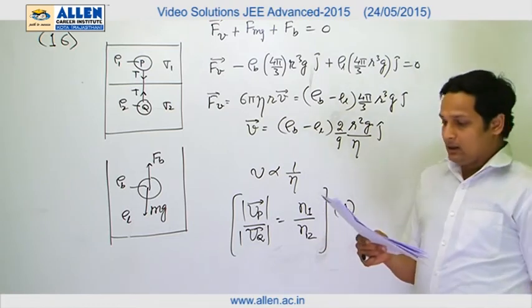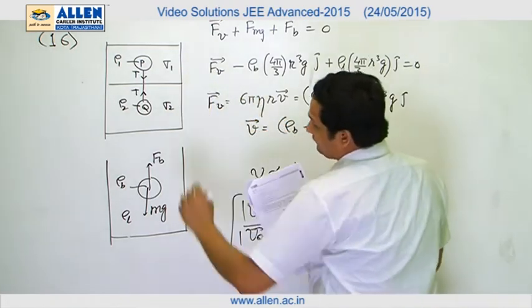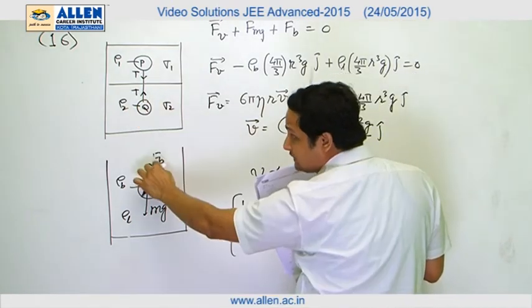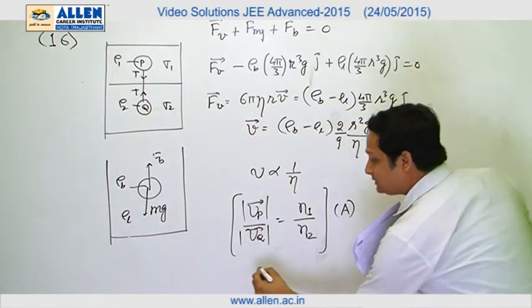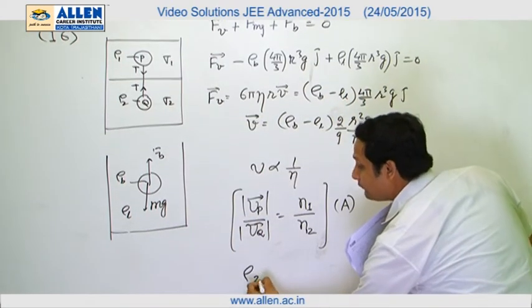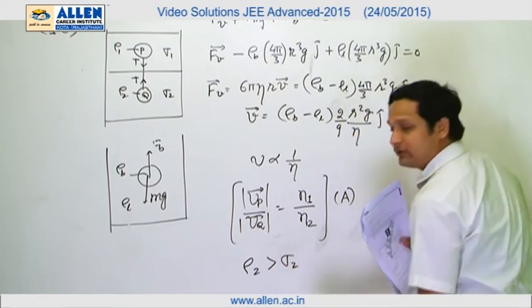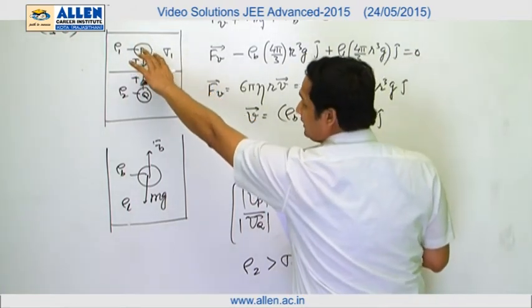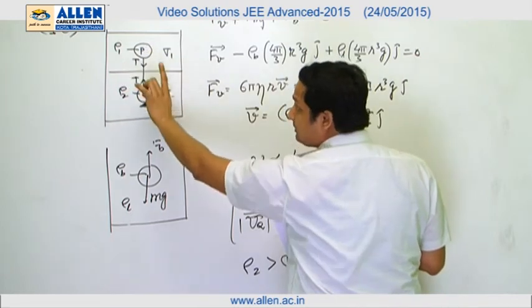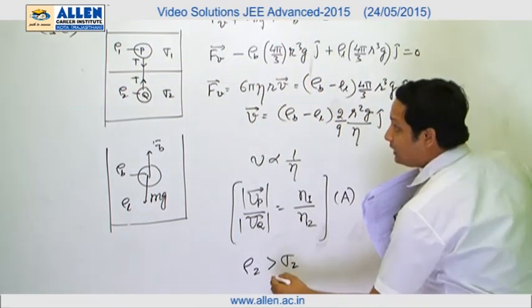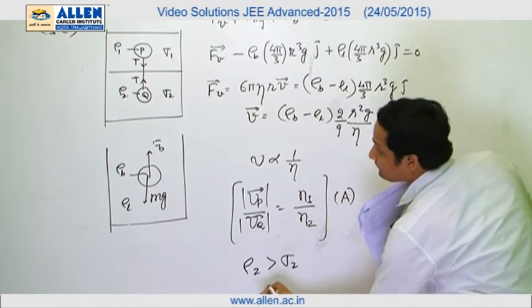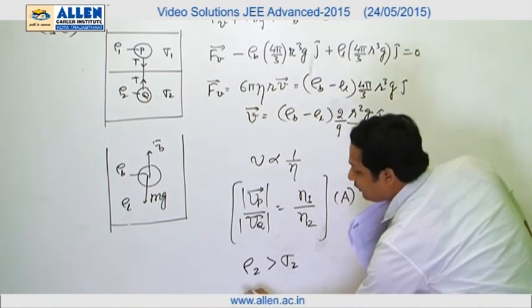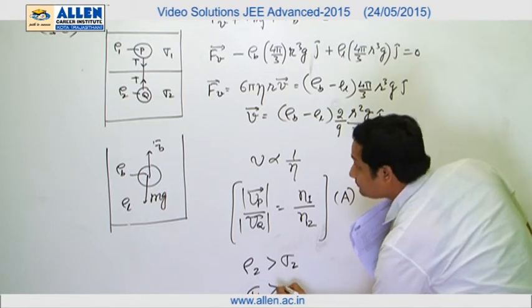Now from this diagram, from the first diagram we can say that this body is in equilibrium and string is taut. That means mg force is greater than buoyant force, that means rho 2 will be greater than sigma 2. And for the above P, it is in equilibrium and string is taut, that means buoyant force is greater than mg.